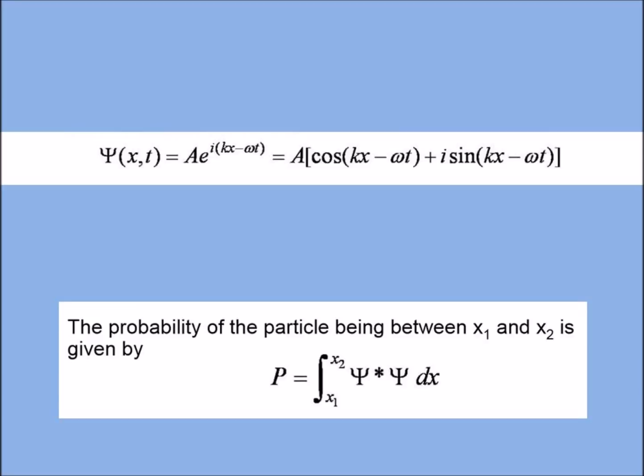So psi is the wave function and psi star is its complex conjugate. Complex conjugate is the quantity which we can get by replacing minus i by i or i by minus i. So in the above equation cos term plus i sine term, the complex conjugate of this term is cos minus i sine kx minus omega t.